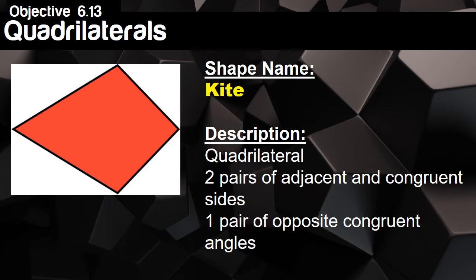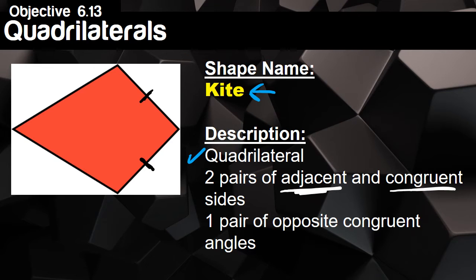Another specific type of quadrilateral is a kite. Our description: this is a quadrilateral that has two pairs of adjacent and congruent sides. Adjacent means next to each other, and congruent means exactly the same. Looking at this kite, these two sides are congruent and next to each other — not opposite one another. We mark those with one slash mark each, and the bottom two sides get two slash marks, marking them as adjacent and congruent.